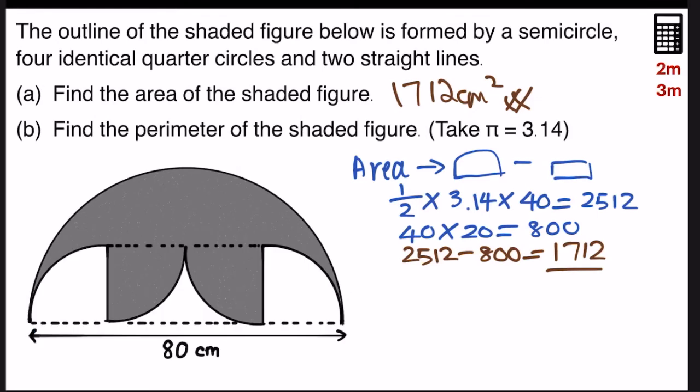Now, part B, find the perimeter of the shaded figure. So there are 2 parts to the diagram. First is the semicircle that we have to find. That's part 1.